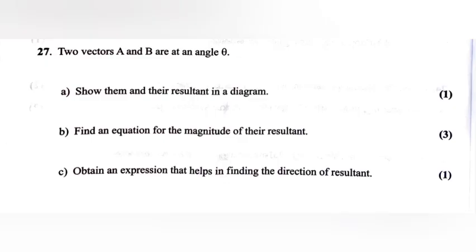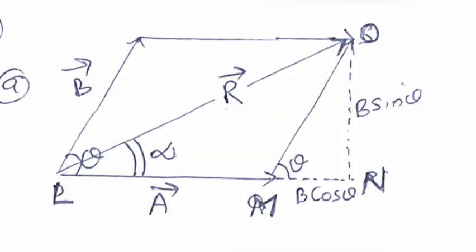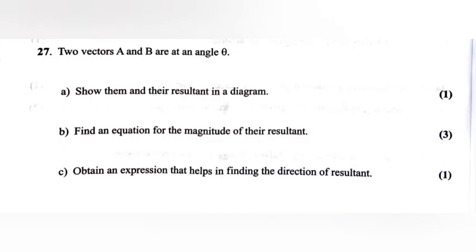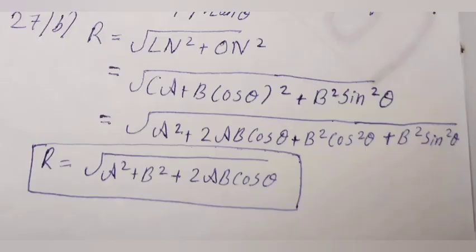Question 27: Two vectors A and B are at an angle θ. Part a: Show them and the resultant in a diagram. Part b: Find an equation for the magnitude of the resultant. Answer: R = √(LN² + ON²). Substituting values: R = √(A² + B² + 2AB·cosθ).